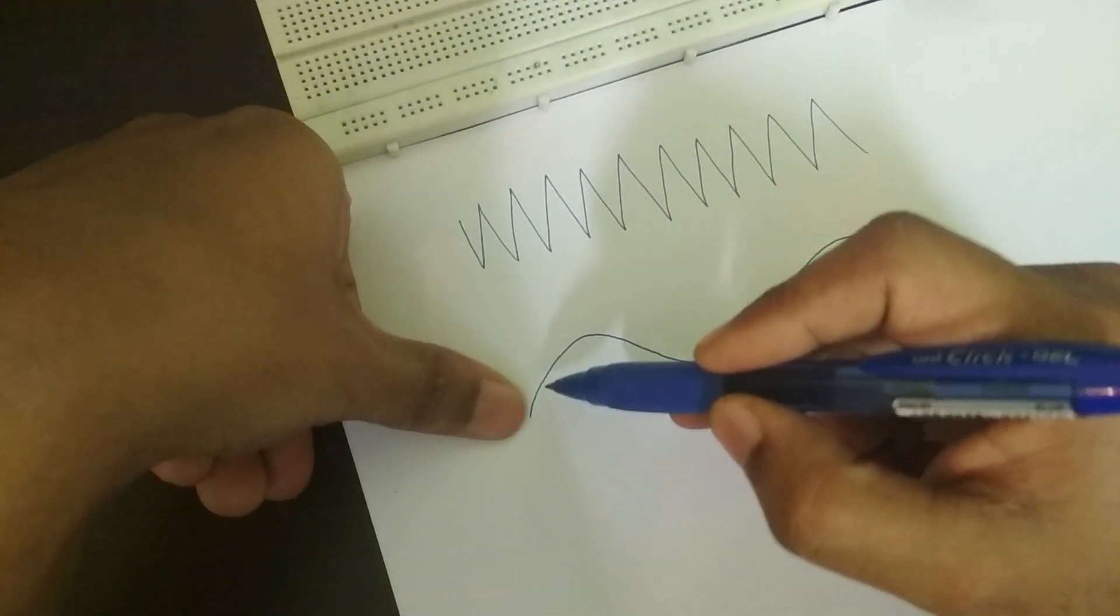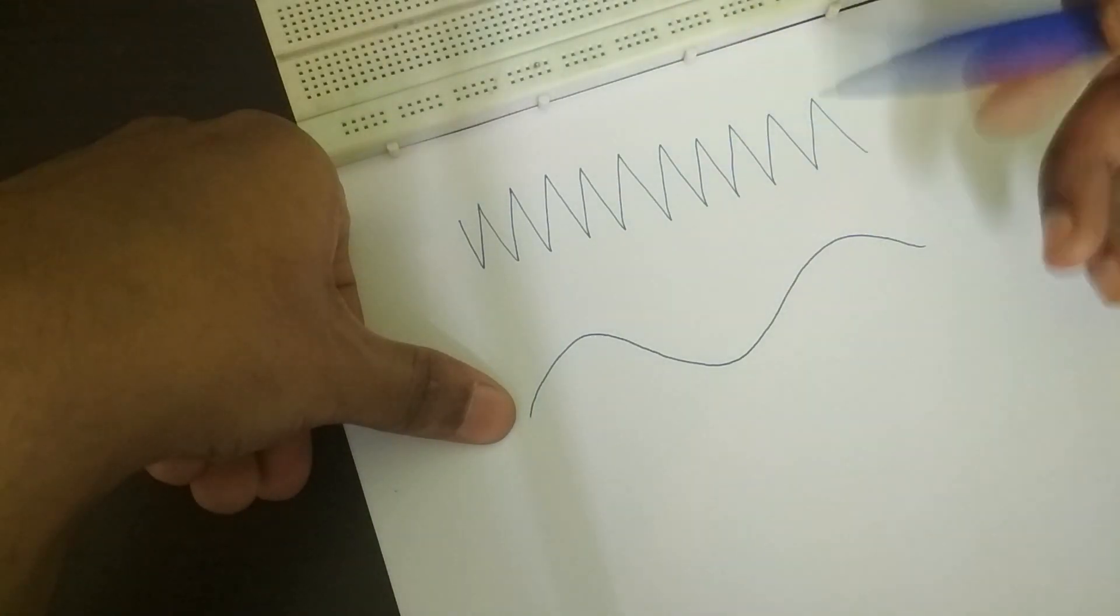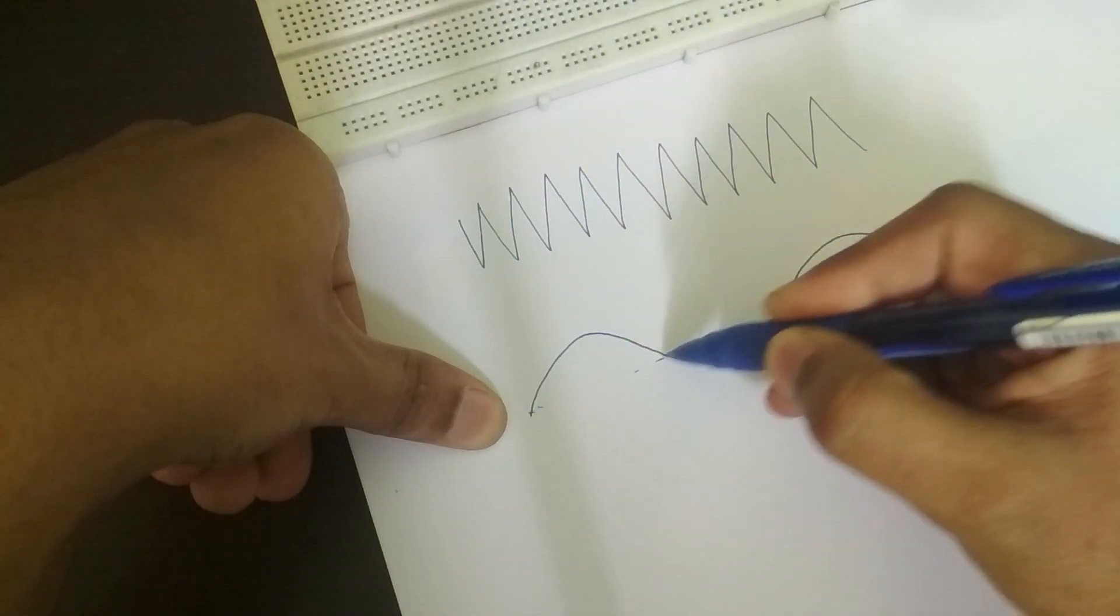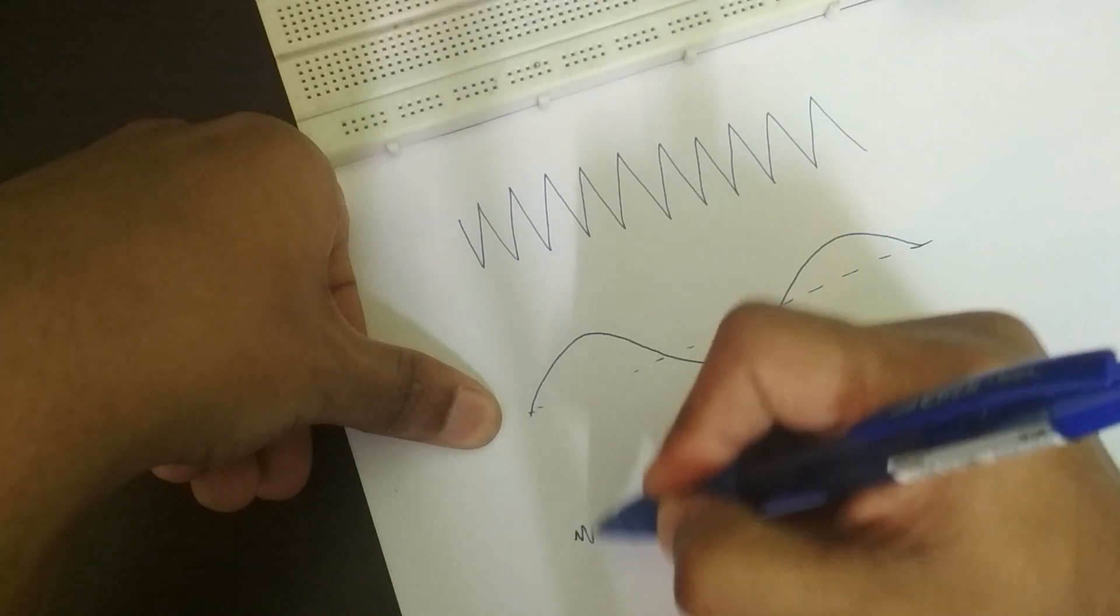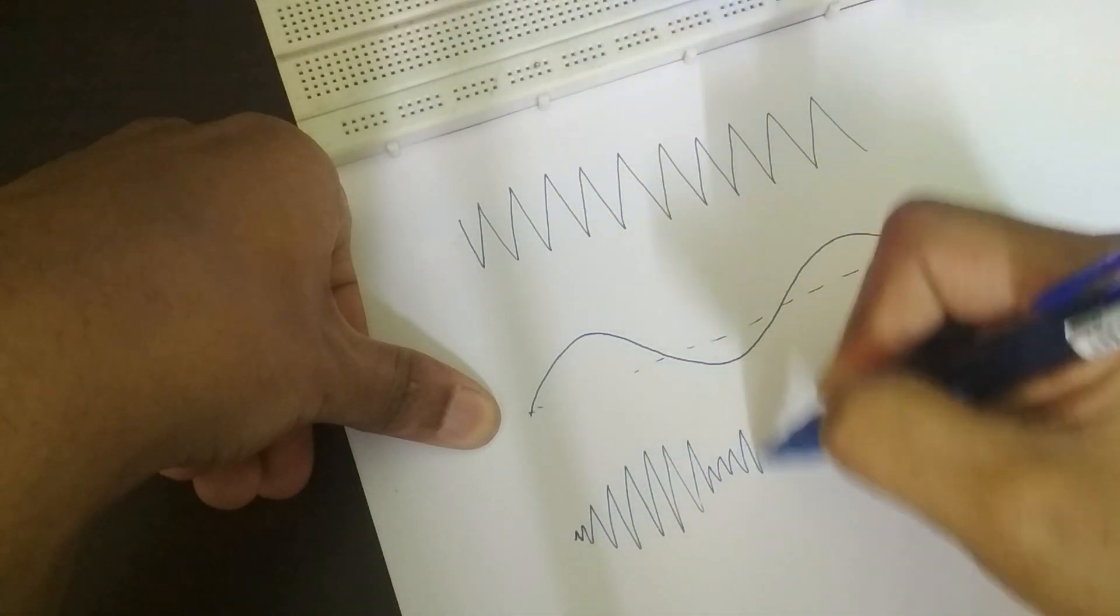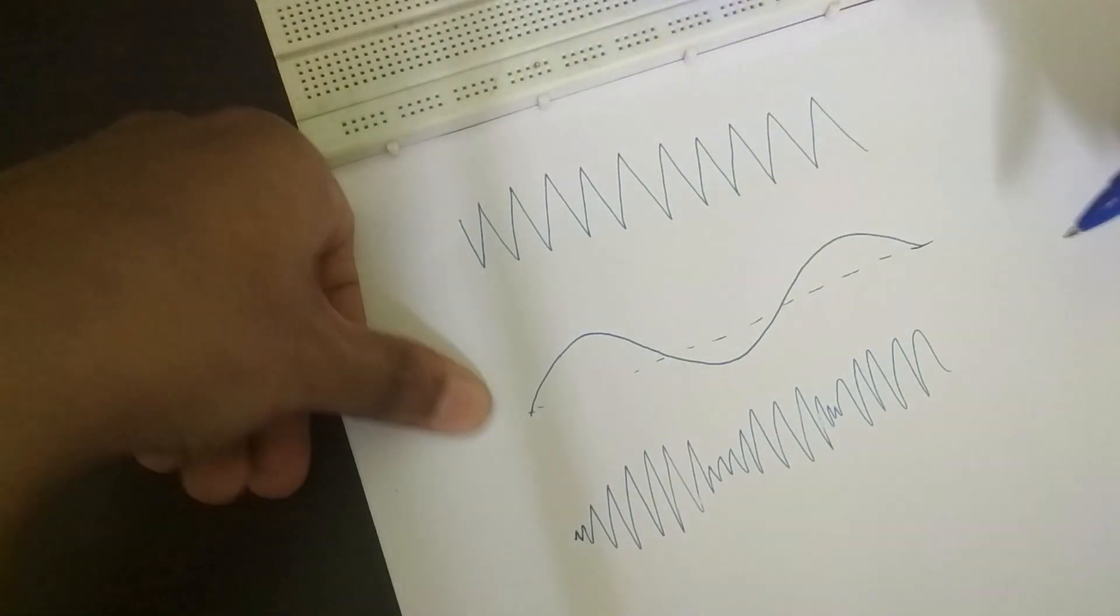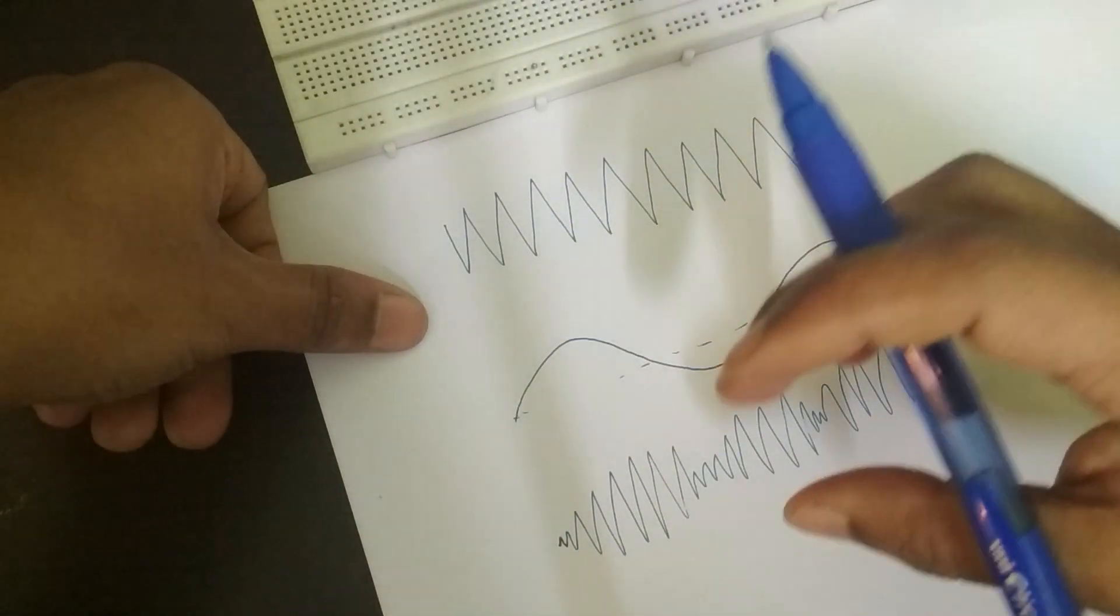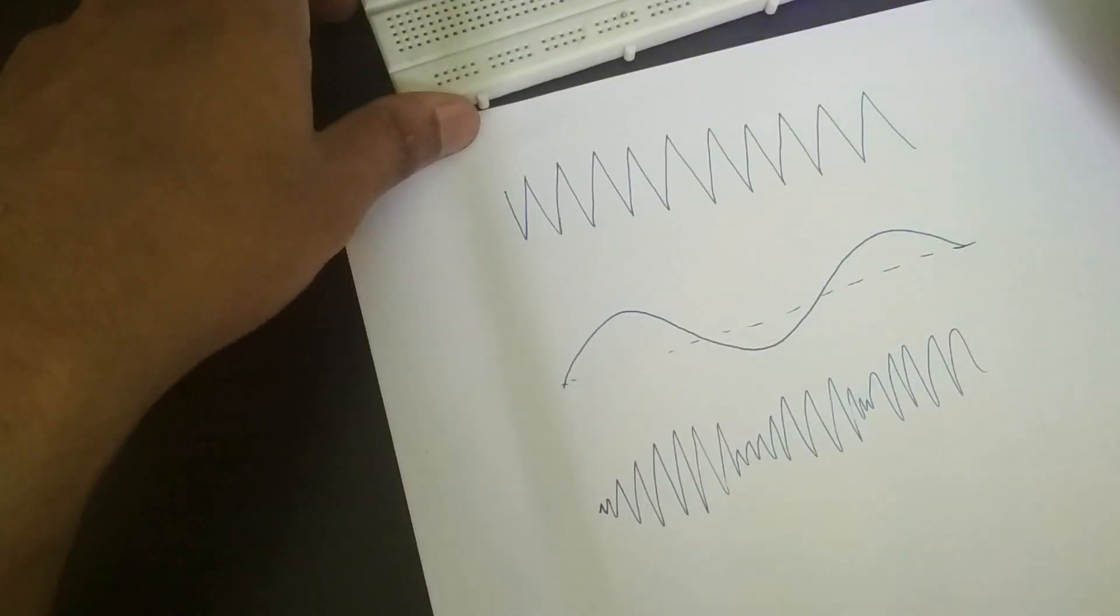So for example, you could use the low frequency wave to modify the volume or the amplitude of the high frequency wave. And so then you would end up with, say this is zero here, right down the middle. So then you end up with zero volume here, and then it gets louder, and then it maybe gets flipped, and then it gets louder, and then it goes zero, and then it gets louder, and so on. And so you end up with this changing amplitude. And so this is amplitude modulation.